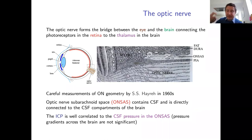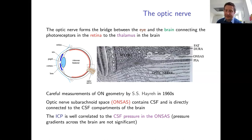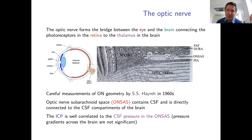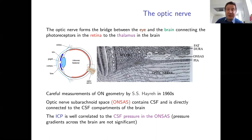There is an inlet in the orbit — essentially a gap in the bone of the skull — known as the optic foramen, which allows fluid to communicate directly between the ONSAS and the cranial CSF. Under normal circumstances the pressure in the ONSAS is pretty much comparable to the pressure in the brain, and studies have confirmed a near-linear correlation between these two pressures, making the ONSAS pressure a good indicator of intracranial pressure.